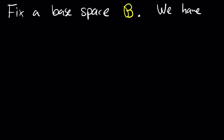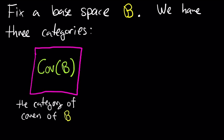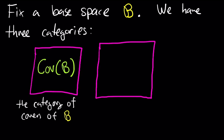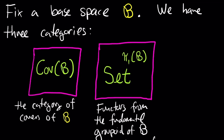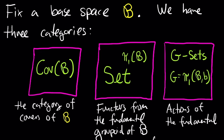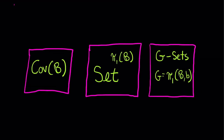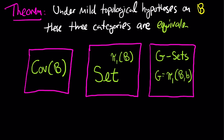Fix a topological space B — that's going to be the base space we work with. We have three interesting categories associated to B: one is the category of covering spaces of B; the second is Set^{π₁(B)}, the functors from the fundamental groupoid of B into the category of sets; and the third is the category of G-sets, where G is the fundamental group of B based at some point little b. The theorem this video is about is that, under some mild topological assumptions on B, these three categories are all equivalent.